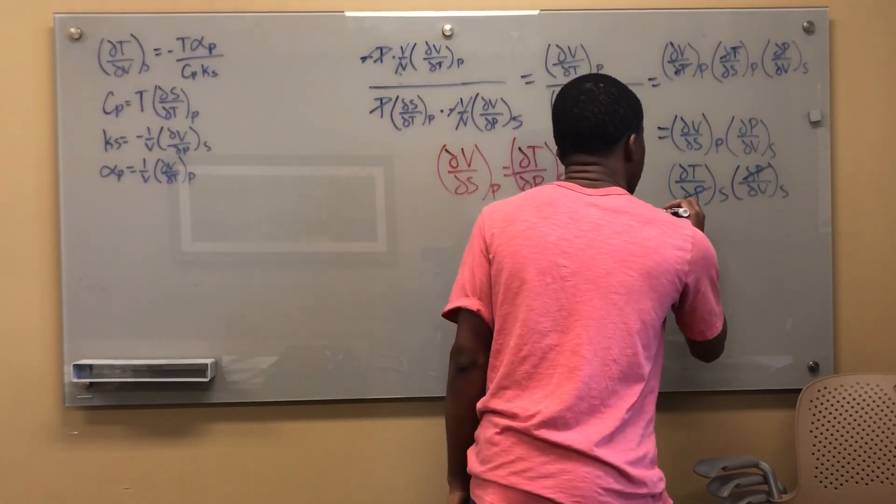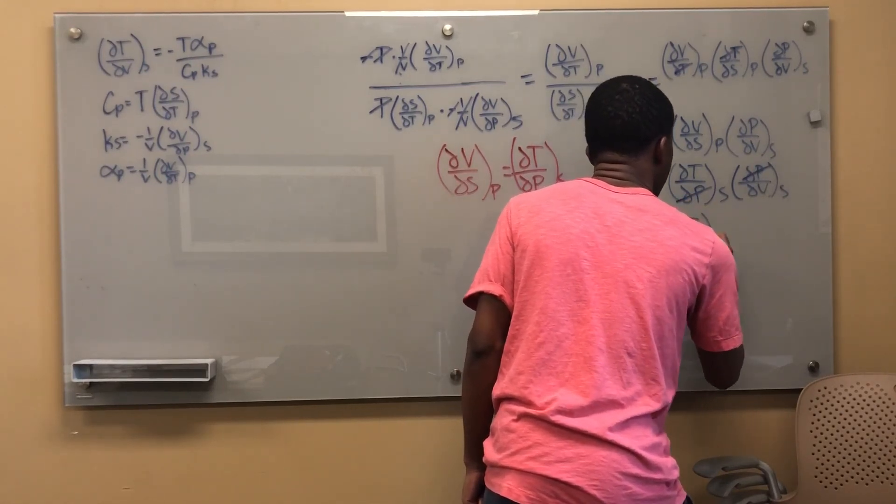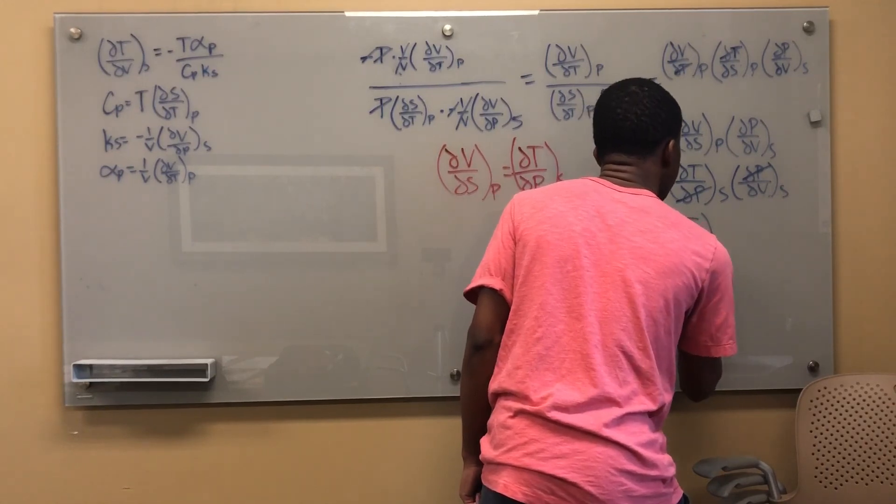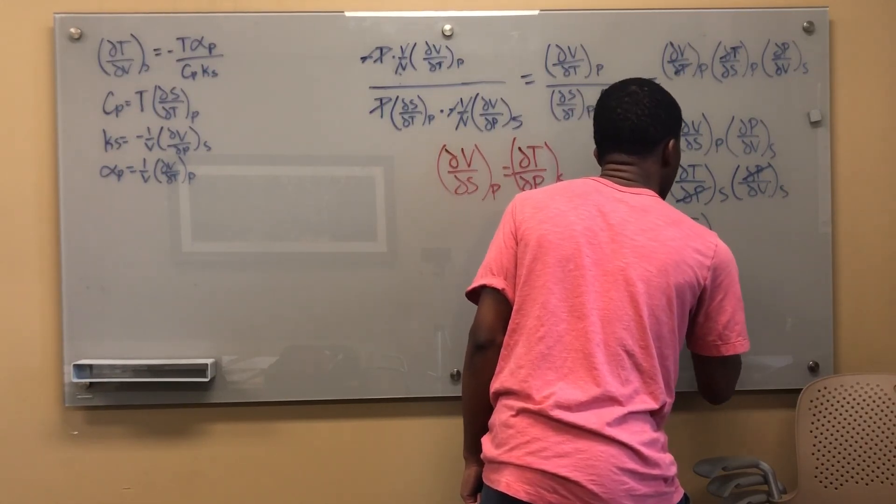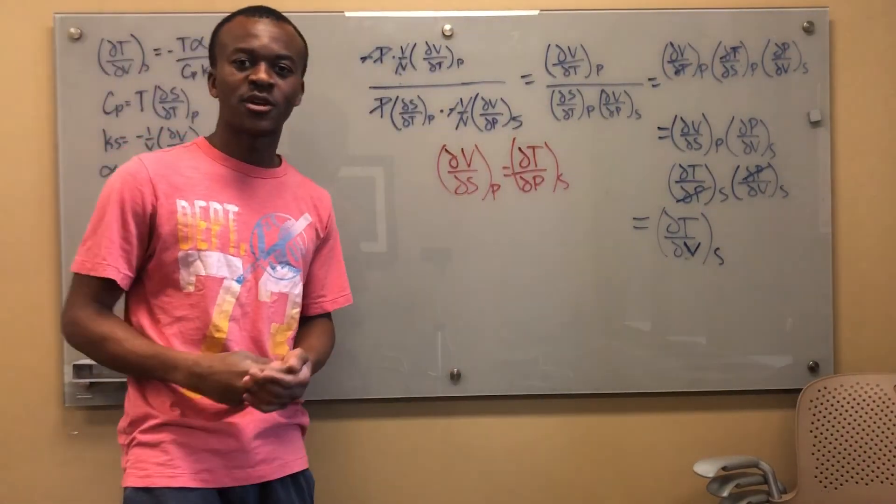So I'm left with del T del V at constant S. And that's what we were trying to prove, right? So we're done.